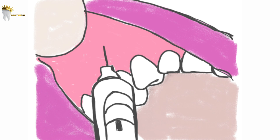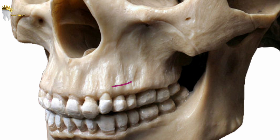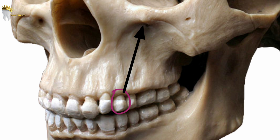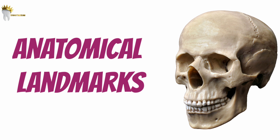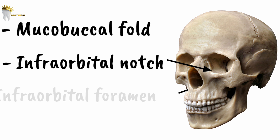For this block, we use a 27 gauge long needle. The area of needle insertion is the height of the mucobuccal fold over the first premolar. We can actually reach the target area — the infraorbital foramen — from any tooth from the second premolar to the central incisor, but going from the first premolar gives us the shortest route. The landmarks to be palpated are the mucobuccal fold, infraorbital notch, and the infraorbital foramen.